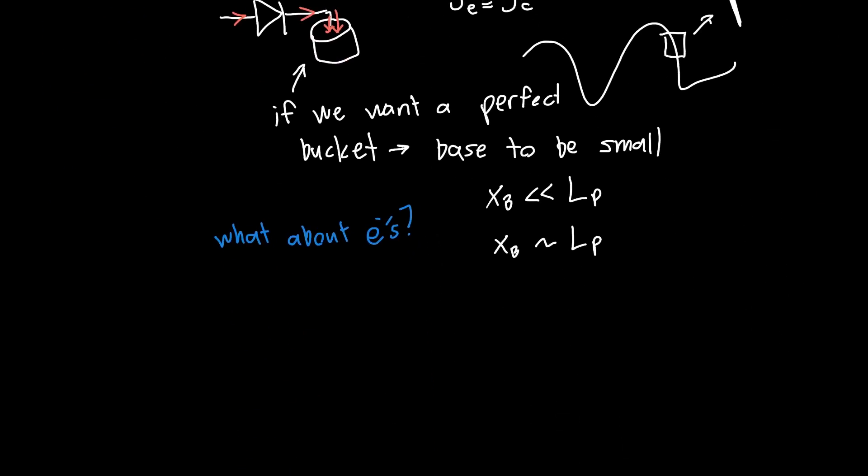In designing a BJT, we want the doping in the base to be much, much less than the doping in the emitter. So we've sort of discovered if we want to design a perfect bucket or a perfect collector, we now have two things that we want to design. We want the doping in the base to be small compared to that in the emitter. And we want the base itself to be small because this allows the holes to get through without bumping into anything.